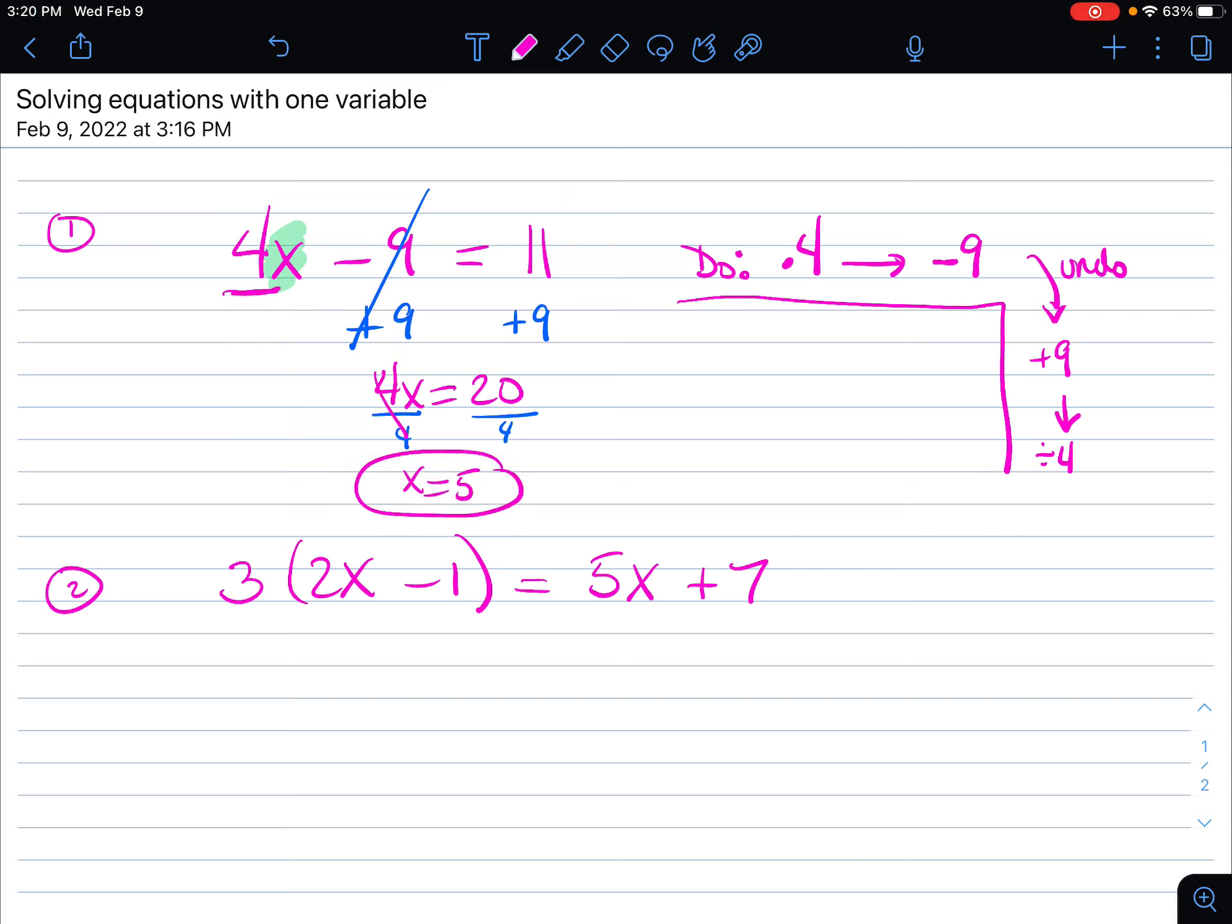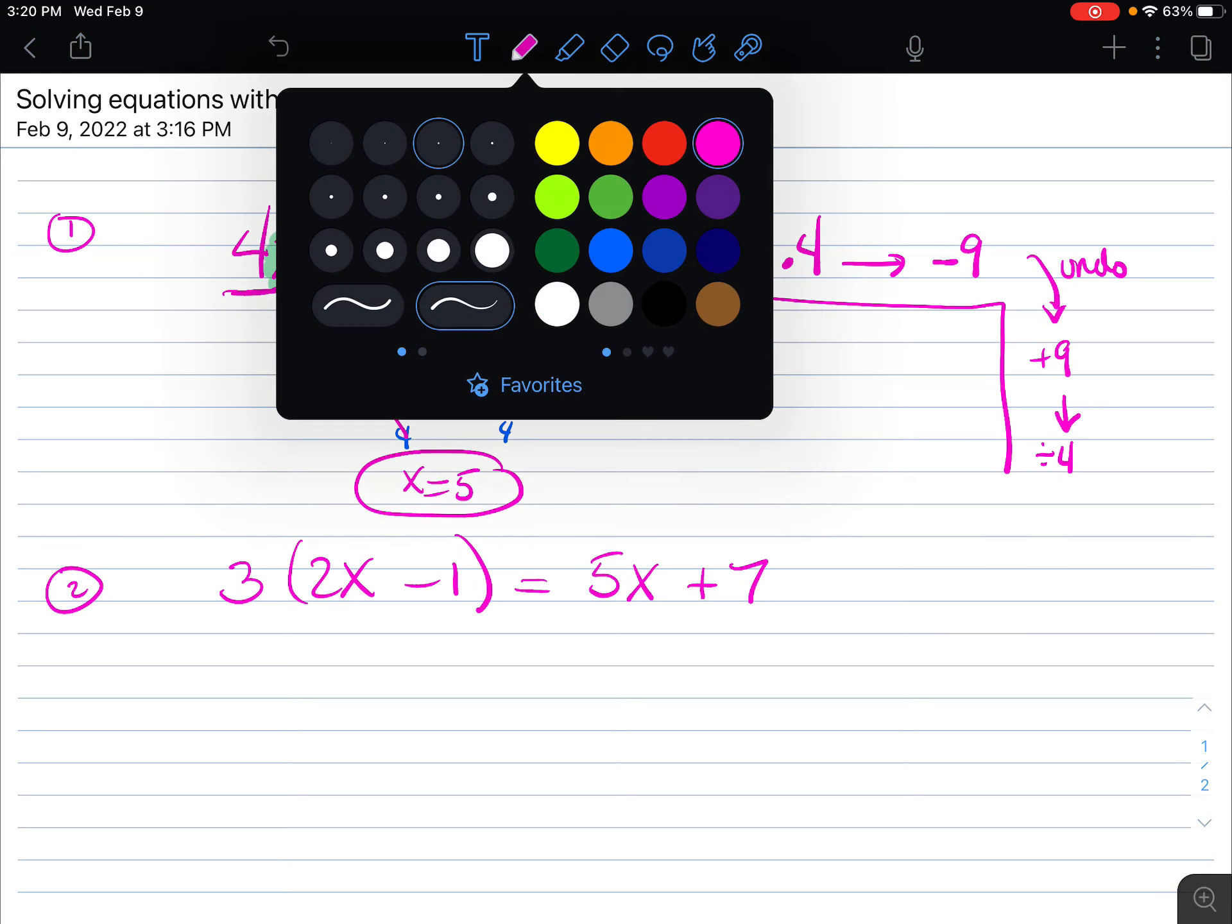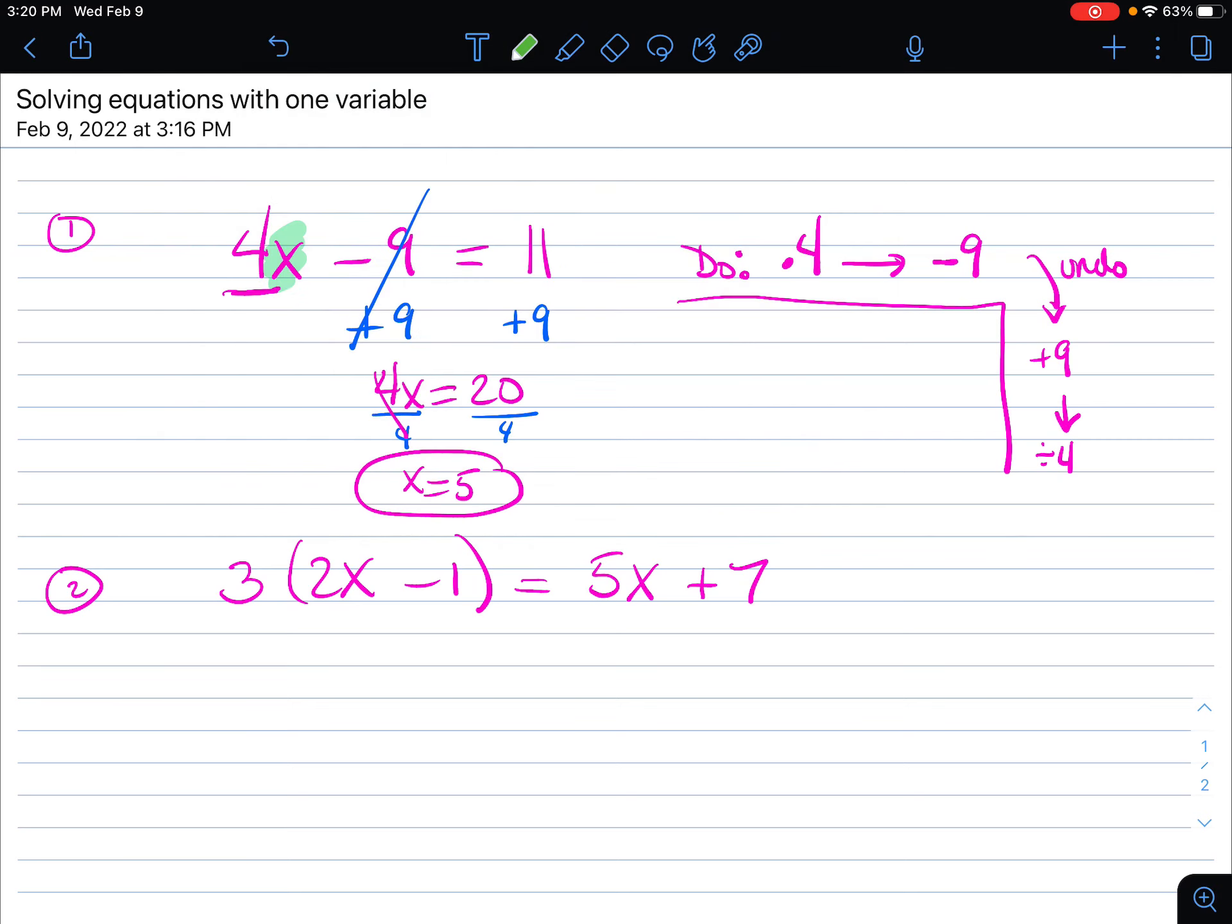Now that's your solution. How do we know we did this correctly? This is when we substitute or plug it in. We're going to plug it in everywhere we see an x. So I'm going to go ahead and this is my check. 4 times x, that's a 5. Take away 9 is supposed to equal 11. Let's make sure it really does.